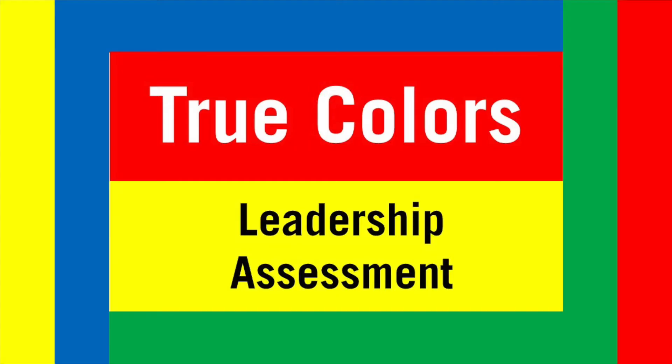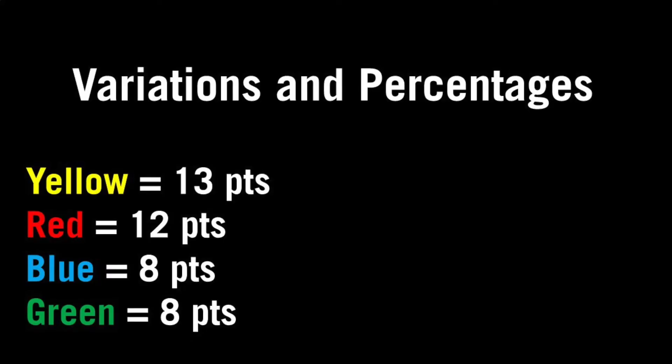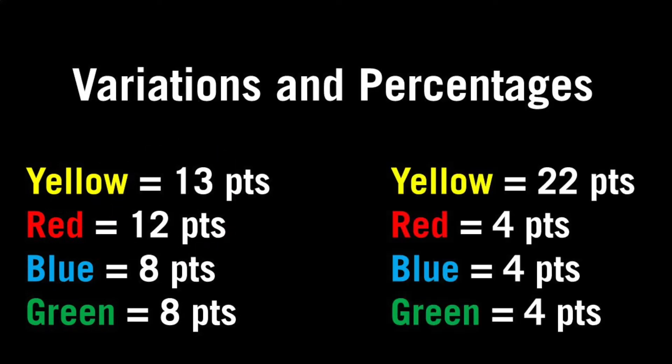This is a simple version of the test. We're going to discuss a primary color that you receive, but there are a lot of combinations. Maybe you're a yellow, but your red number is just one shy — that's very different than someone that is dominantly yellow with nothing even close. We can't cover every variation and every ratio of colors, so don't be surprised if there are a few things you disagree with, which is likely due to having a large or small number in one of the other colors.